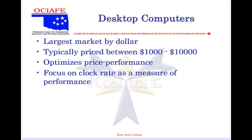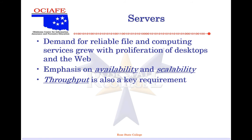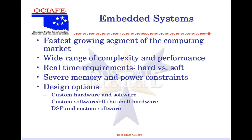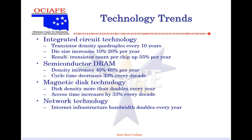Desktop computers — largest market by dollar, typically priced between $100 and $1,000 now. Of course, the higher end the more good stuff you get. Demands for servers — demand for reliable file and computing services grows. They're more about availability and scalability. Embedded systems are a fast-growing segment of the computer market — they give you complexity, performance, a lot of memory, and they also take up a lot of power.